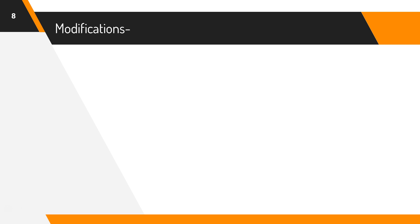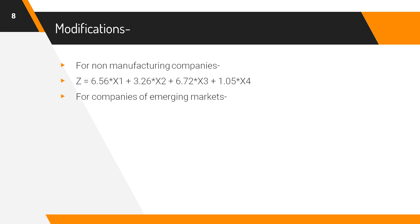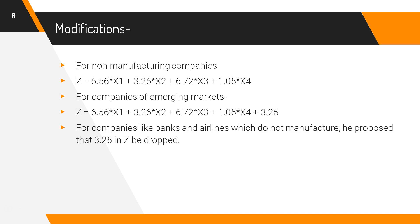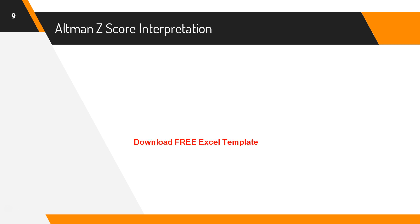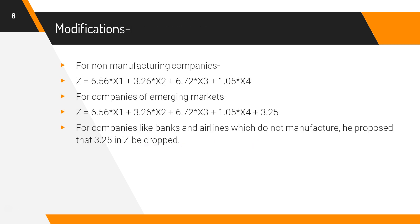For non-manufacturing companies, the modification of Altman's Z-score is as follows. And for companies in emerging markets, the Z-score is calculated using a different equation. For companies like banks and airlines which don't manufacture, Altman proposed that the constant 3.25 in the Z-score formula should be dropped.